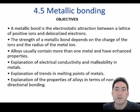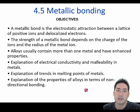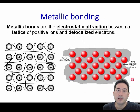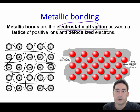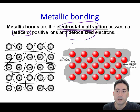Welcome to Lesson 4.5, Metallic Bonding. These are the objectives for the lesson and the definition of a metallic bond. The key terms are electrostatic attraction, lattice, and delocalized electrons — that's what's special about metallic bonds. Please remember to write those three words in your definition.